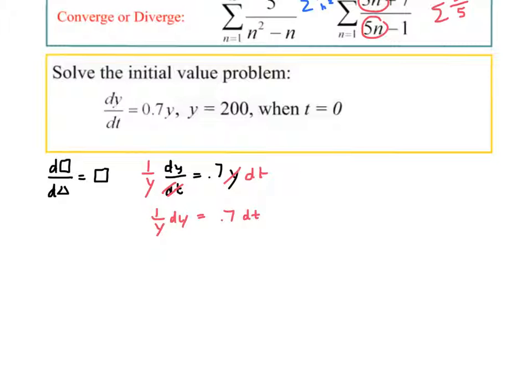So I separate, now I integrate both sides. This is the natural log of y equals 0.7t plus a constant. Hopefully you remember this from calc 1.